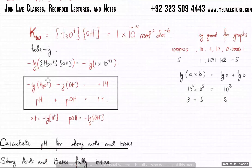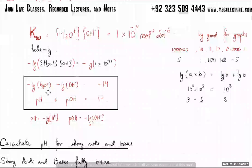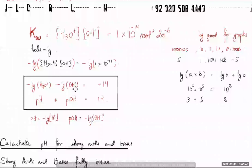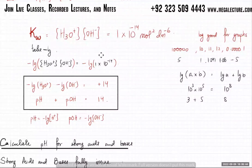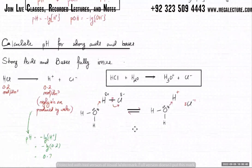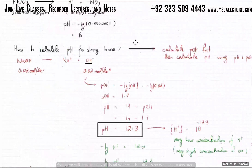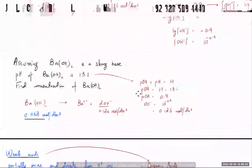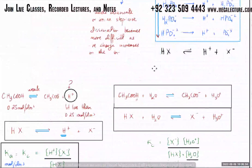Negative log — that's what 'p' means. So pH plus pOH is equal to 14. When you take the negative log of [H⁺][OH⁻] = Kw, you get negative log of H⁺ and negative log of OH⁻, giving you pH plus pOH. Now for weak acids — they ionize to produce one H⁺ ion and one anion.